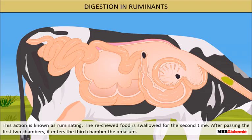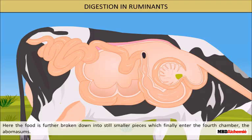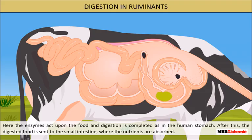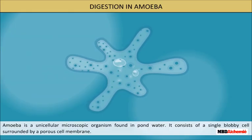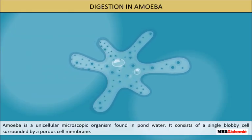The rechewed food is swallowed for the second time. After passing the first two chambers, it enters the third chamber, the omasum, where the food is further broken down into still smaller pieces. These finally enter the fourth chamber, the abomasum, where enzymes act upon the food and digestion is completed, as in the human stomach. After this, the digested food is sent to the small intestine where the nutrients are absorbed.